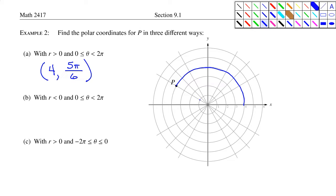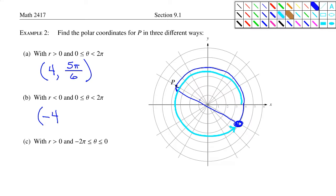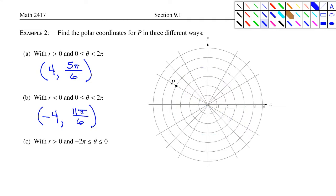Part B: write the point with a negative radius, but still in the first rotation. Using a negative radius of −4 projects the point back through the pole. The angle in that case is 11π/6. For part C, with a positive radius of 4 going backwards one rotation, the angle would be −7π/6.